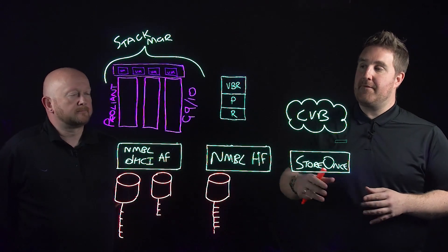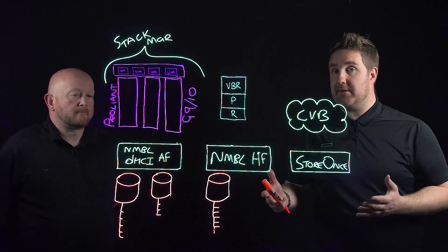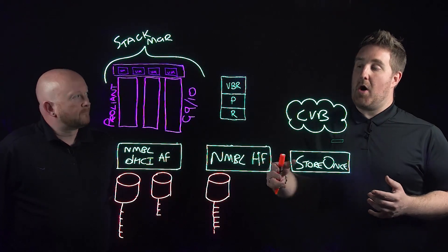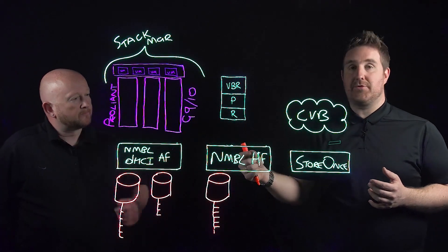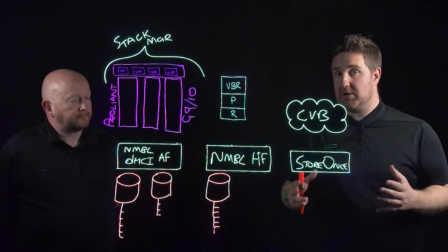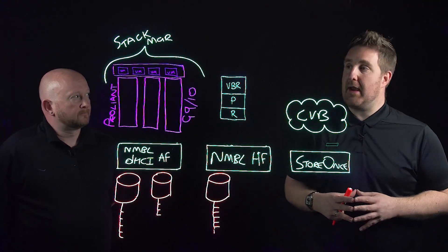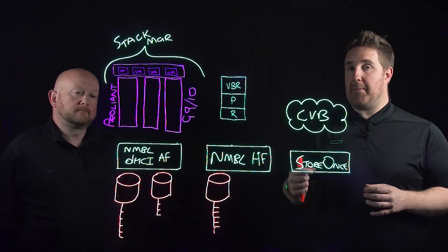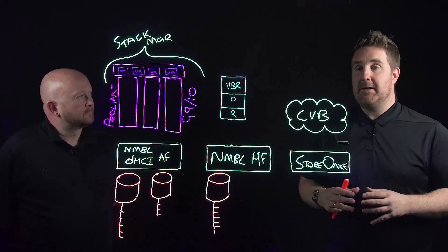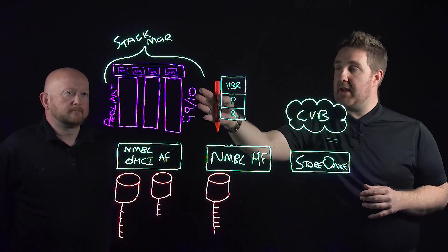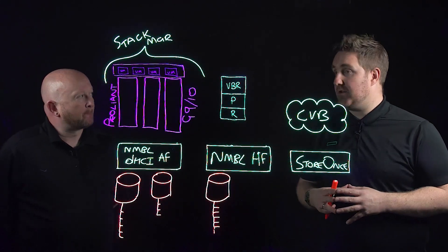DHCI is made up of compute nodes which are ProLiant Gen 9 and Gen 10s. They're also made up of a Nimble Storage DHCI-enabled storage array which could be all-flash or hybrid flash — I've drawn an all-flash platform here. It also consists of VMware vSphere, so we've got virtual machines running within VMware vSphere and of course vCenter as well.